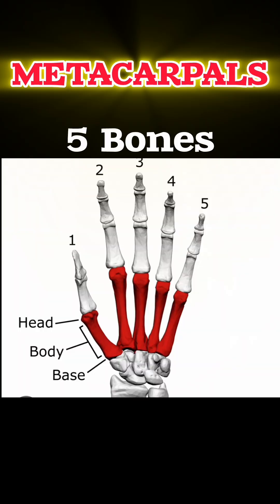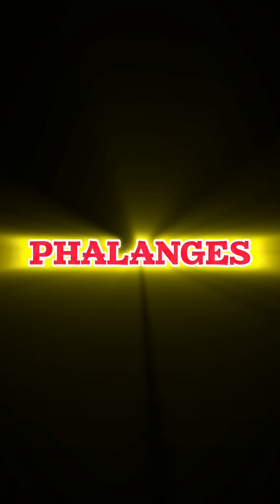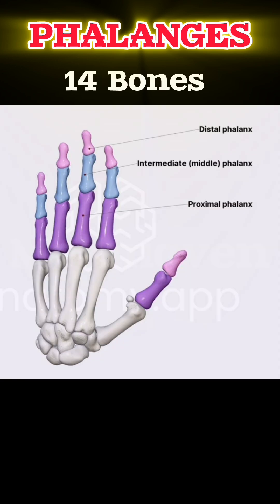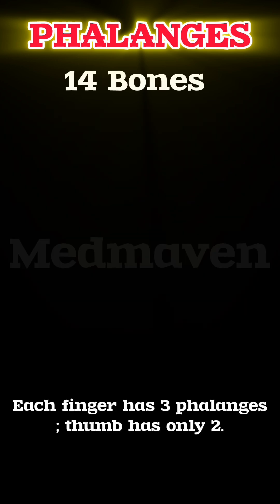Metacarpals: 5 bones that form the palm. Phalanges: 14 bones. Each finger has 3 phalanges, but the thumb has only 2 phalanges.